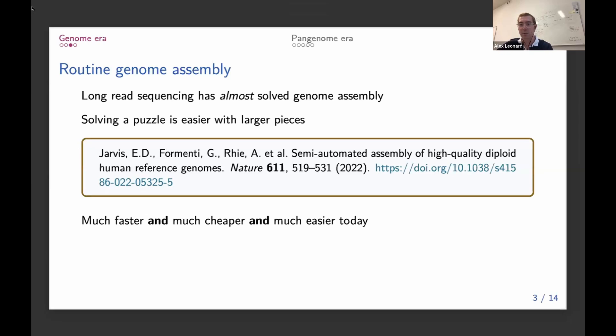As long as we have the right data type, we can really start to produce dozens of high-quality genomes, even for a small lab, as long as you can afford the sequencing.